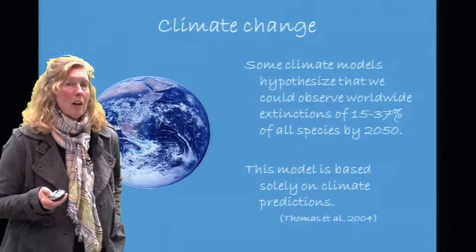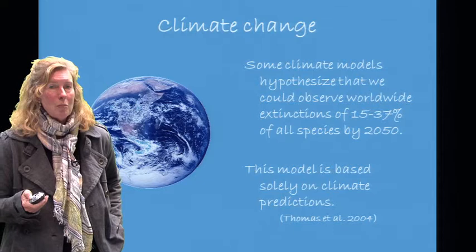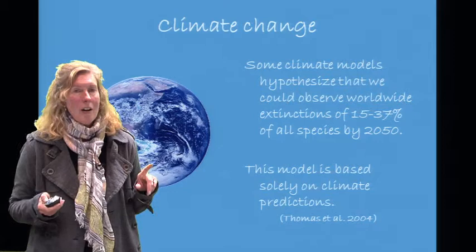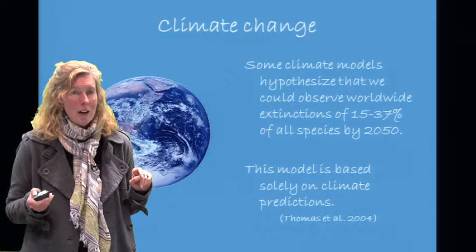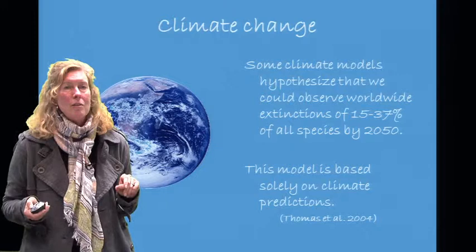Some climate models hypothesize that we could observe worldwide extinctions of 15 to 37% of all species by 2050 — that is, 15 to 37% of all species in fewer than 40 years. Most daunting is that this model is based solely on climate predictions; all of the other threats we just reviewed were not factored in.